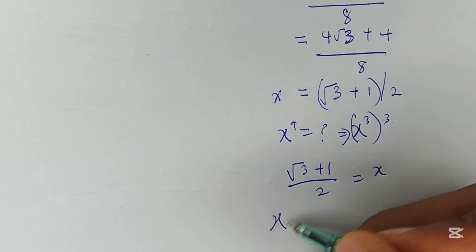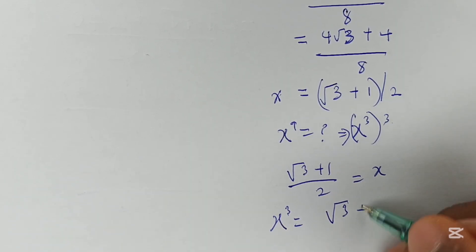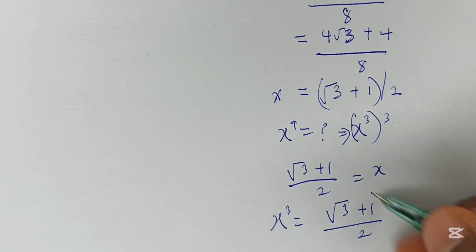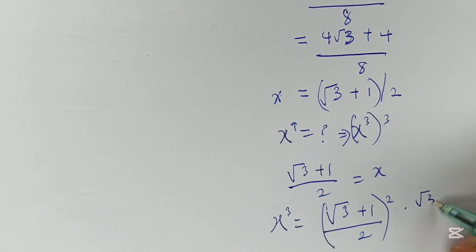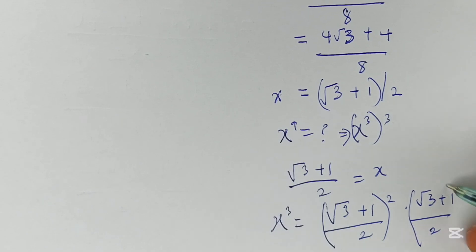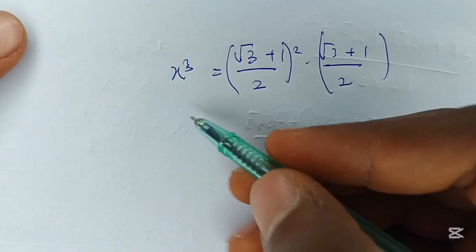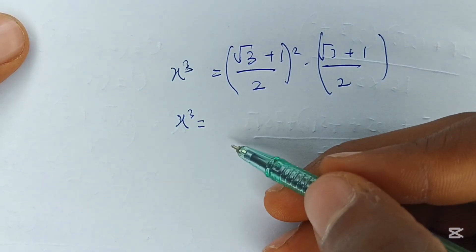Let's compute x³. We express x³ as x² times x, i.e., [(√3 + 1)/2]² times (√3 + 1)/2. So x³ equals (√3 + 1)² all over 4, multiplied by (√3 + 1)/2.